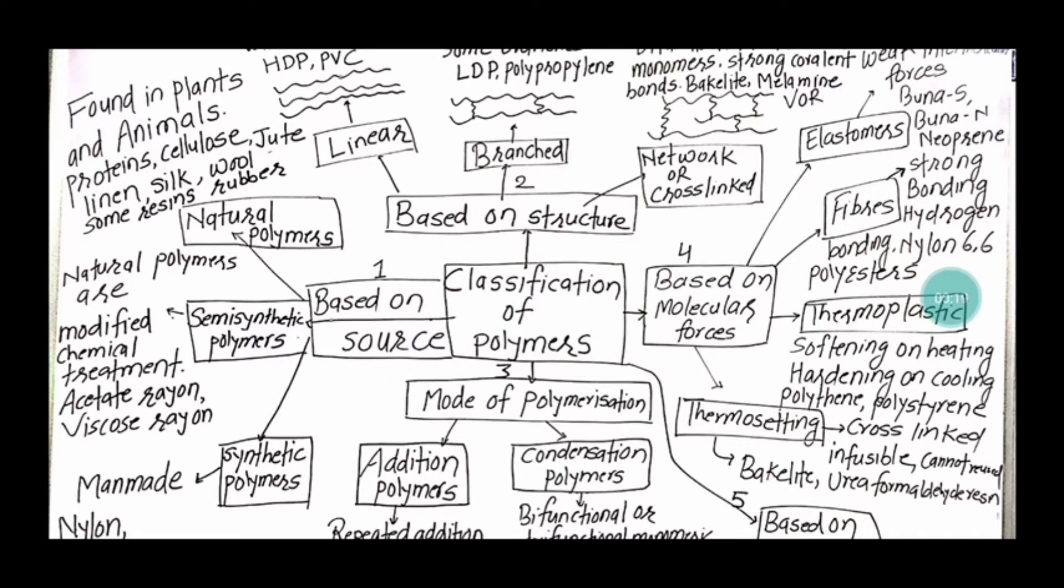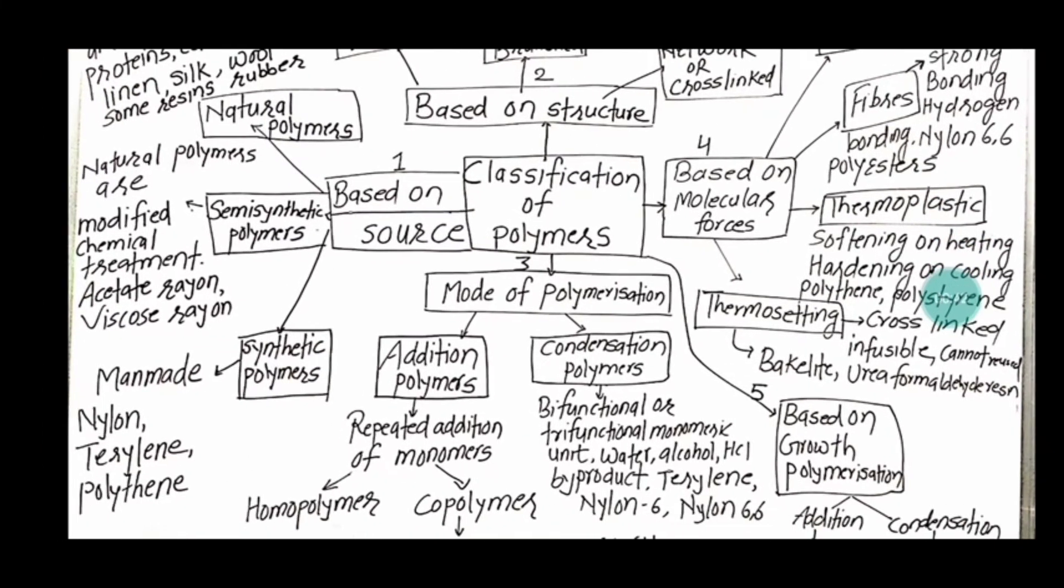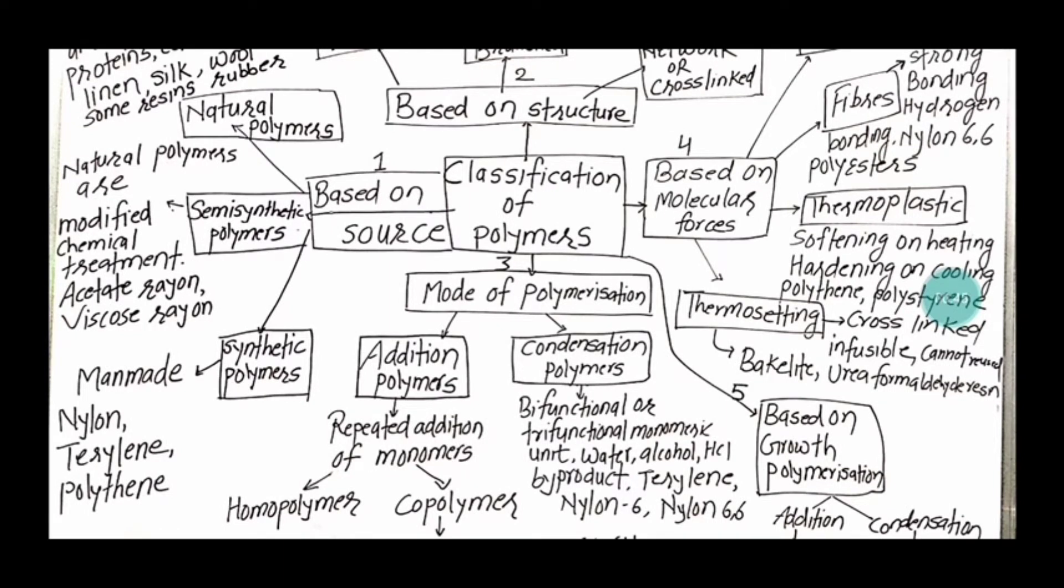For example, proteins, cellulose, jute, lignin, silk, wool, and some resins and rubber. Semi-synthetic polymers are natural polymers but they are modified by some chemical treatment, for example acetate rayon and viscose rayon. Synthetic polymers are man-made polymers.